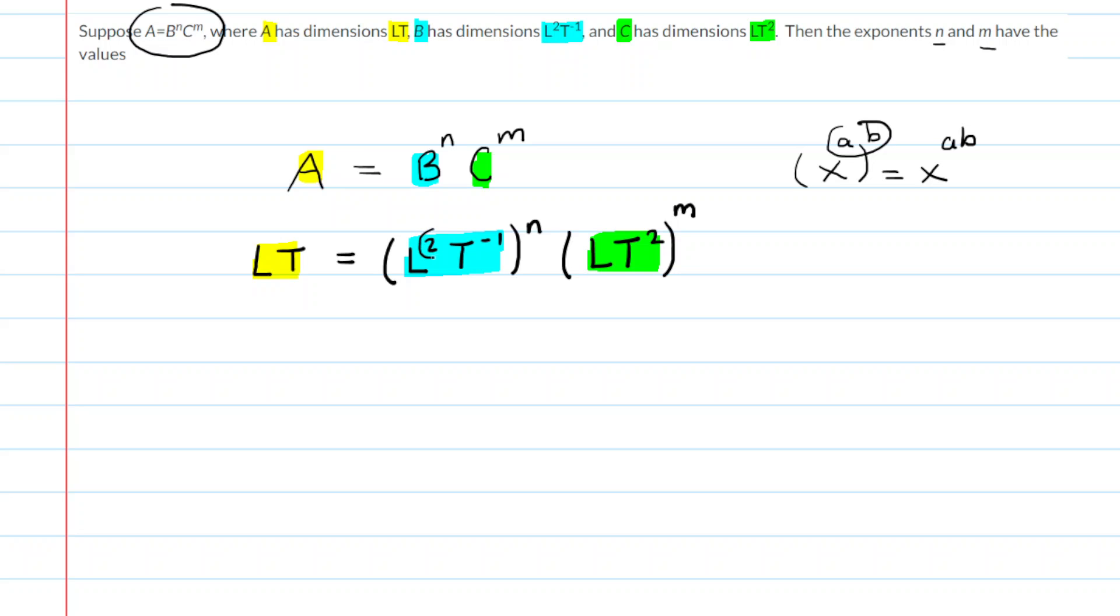So for example, you have l to the power of 2, which is raised to the power of n. So when you multiply those, you will get l to the power of 2n. You will also do that exercise for this power. Negative 1 times that n will give you t to the power of negative 1n.